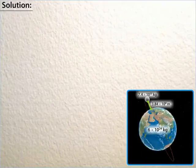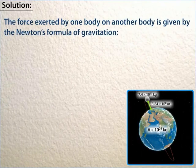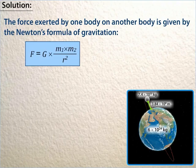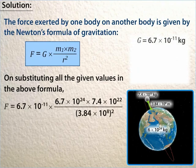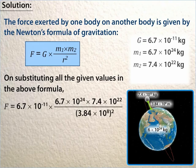Let us solve the given problem. The force exerted by one body on another body is given by Newton's formula of gravitation: F = G·M1·M2 / R². On substituting all the given values — G as 6.7 × 10⁻¹¹, M1 as 6 × 10²⁴, M2 as 7.4 × 10²², and R as 3.84 × 10⁸ —